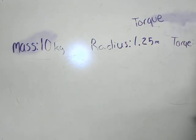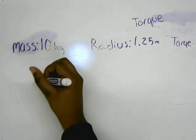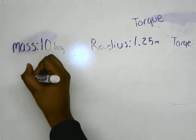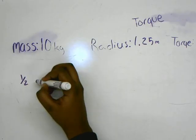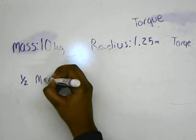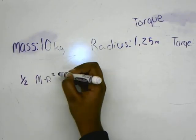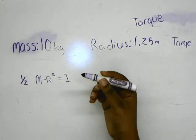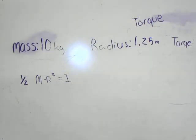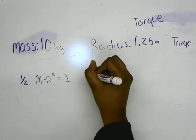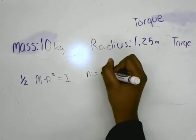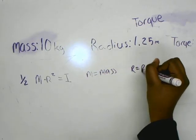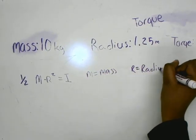So the equation you have to use is 1/2 Mr squared equals I. Okay, so like m equals mass, r equals radius, and I equals torque.